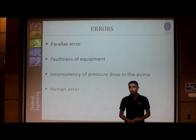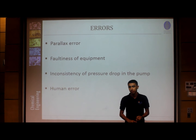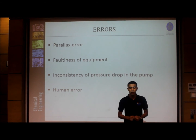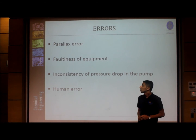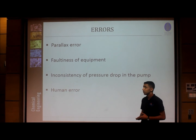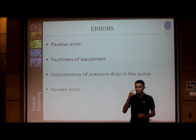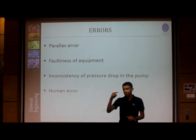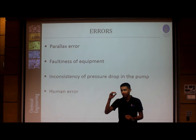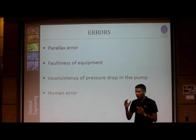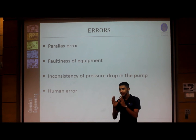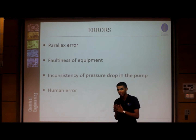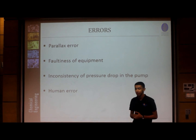My name is Hisham, and I will talk about errors, recommendations, and the conclusion. The first error is parallax error — eye contact should be perpendicular to the level of the fluid being observed, which is difficult to achieve accurately, affecting our results. The second error is faulty equipment — the refractometer in the lab did not accurately match the refractive index values in the lab manual for KMnO4.